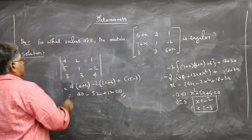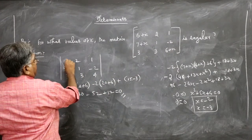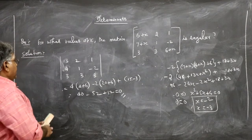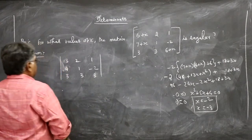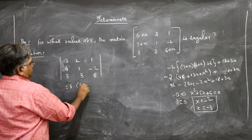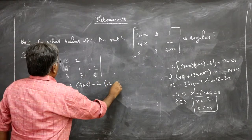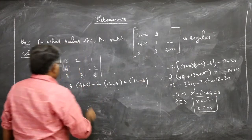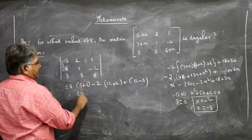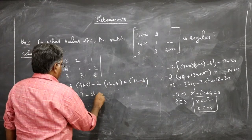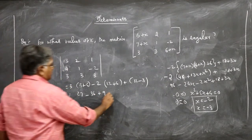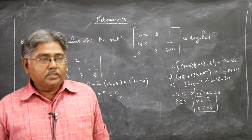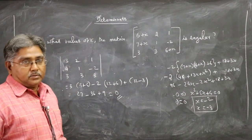For x = -3: 6-3 = 3, 7-3 = 4, 6-3 = 3, so the matrix becomes [3, 2, 1; 4, 1, -2; 3, 3, 3]. Evaluating: 3 into (3+6) minus 2 into (12+6) plus 1 into (12-3) = 27 minus 36 plus 9 = 0. Both values make the determinant 0, hence we can say they make the matrix singular.